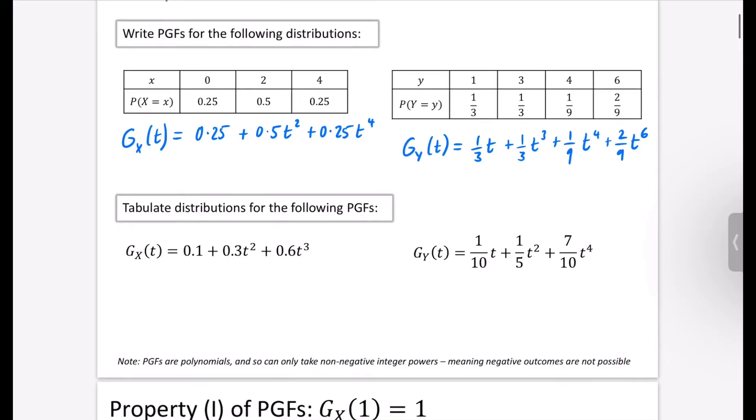And now I want to tabulate the distributions for the following probability generating functions. So I'll tabulate this one, and then you can tabulate this one that we've got here. So we're going to have x is our outcome, and the probability that our random variable is equal to that outcome. And we'll think about the different options that are available. With that 0.1, that probability goes with t to the power of 0. The 0.3 is going to t squared, and the 0.6 is going to t cubed. So it's just going to have the outcomes 0, 2, and 3.